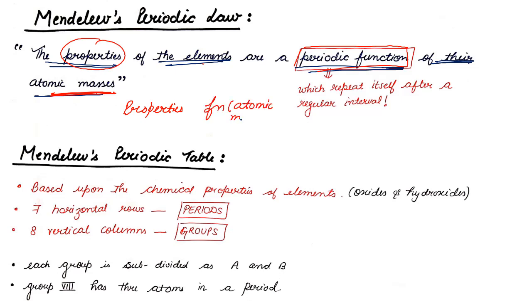As soon as you change the atomic mass, the property of the element will be changed. Like in maths, you write y is equal to 5x. So, y is a function of x. You change the value of x, the value of y changes. Again, change the value of x, value of y changes. Similarly, I can say the properties of the element are the periodic function of their atomic masses. You change the atomic mass and the property will be changed.